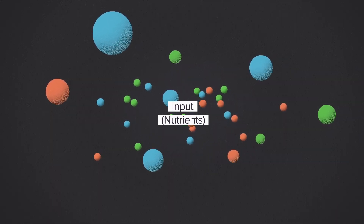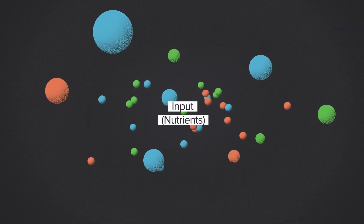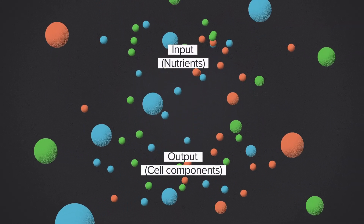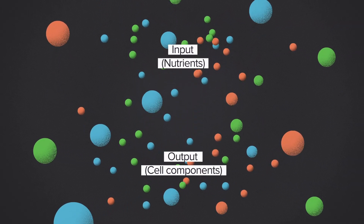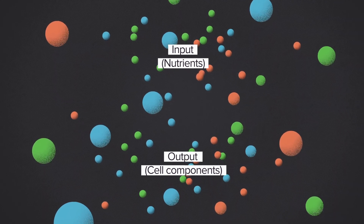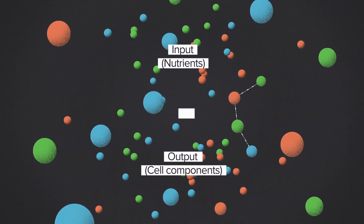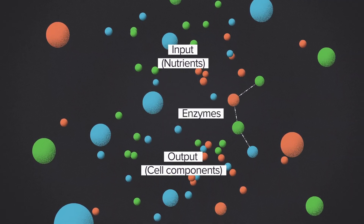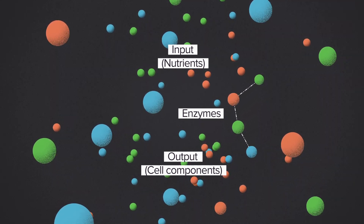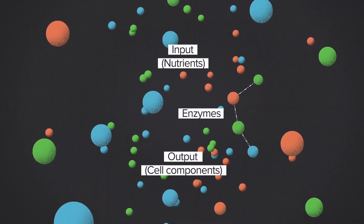A typical cell sees lots of molecules that are potential food. If it's made of carbon, something in biology will eat it. The output that a cell wants to produce is more cells. Metabolism makes all the components that a cell needs to grow, hundreds of different kinds of molecules. In between, the cell has enzymes. Each enzyme performs one chemical operation, transforming a molecule in a way that brings the inputs closer to the desired outputs.